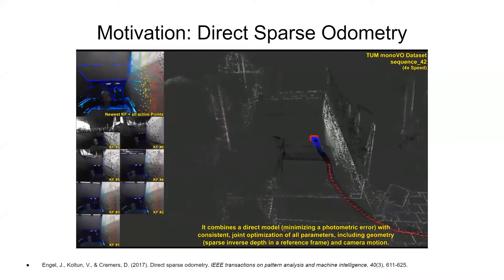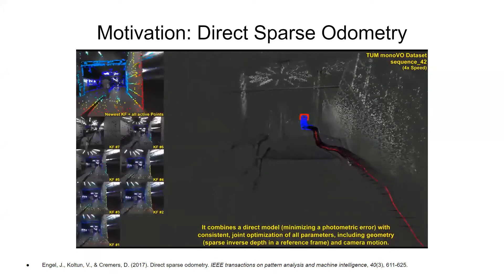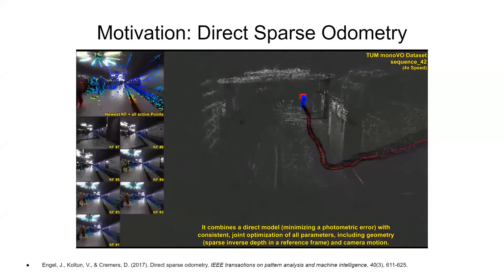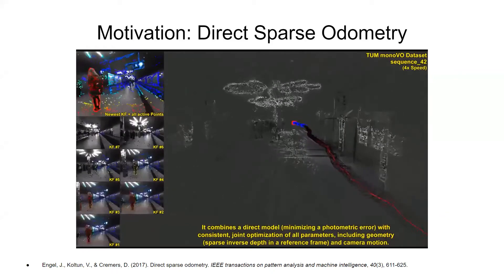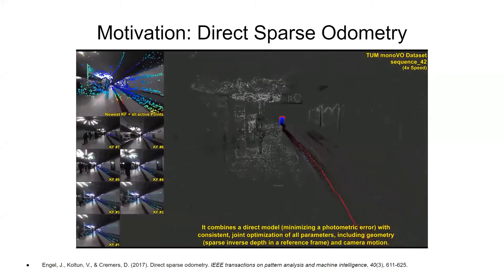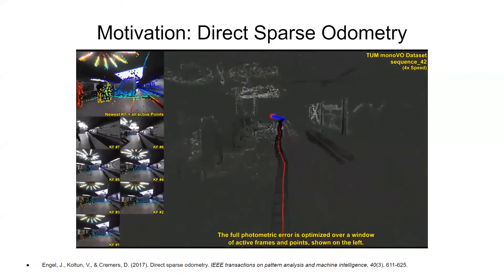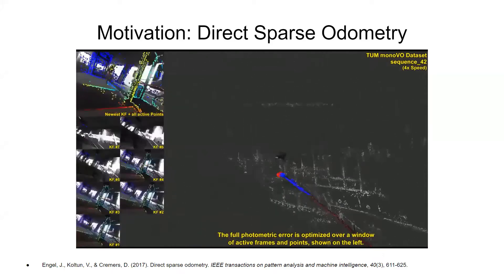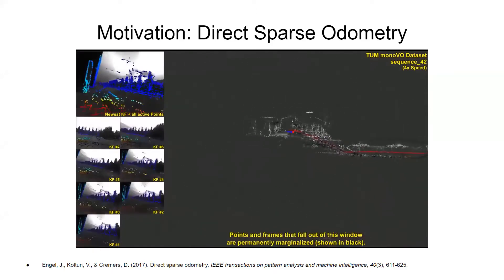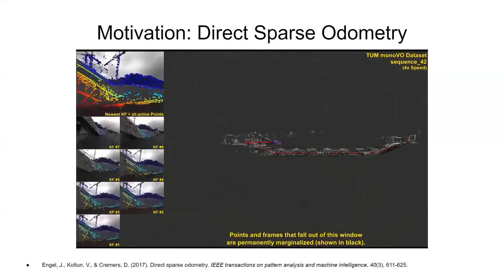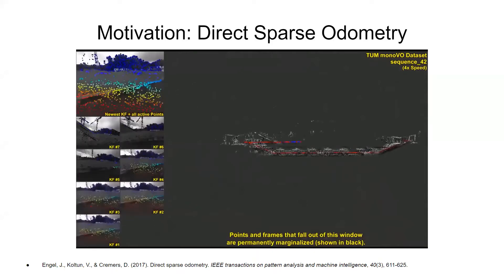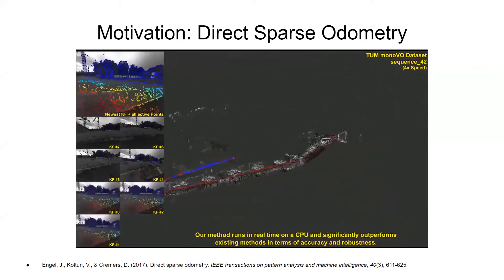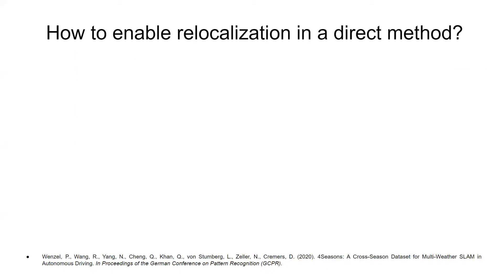In recent years, the field of visual SLAM has seen a rapid development of robust and powerful systems. As a motivation for our work, we mention a state-of-the-art method, direct sparse odometry, or DSO, which achieves excellent performance on odometry tasks. Nonetheless, DSO doesn't offer relocalization capability, which can be crucial in recovering from tracking failures and solving the kidnapped robot problem. In this work, we raise the question of how relocalization can be enabled in a direct setting.